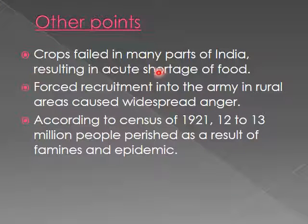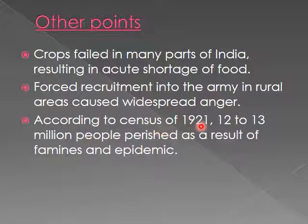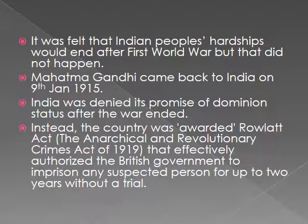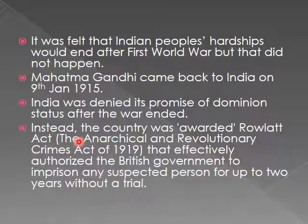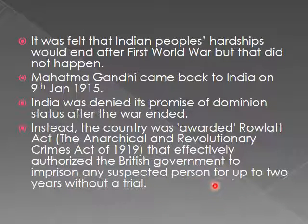Crops failed in many parts of India, resulting in acute shortage of food. Forced recruitment into the army in rural areas caused widespread anger. According to the census of 1921, 12–13 million people perished as a result of famines and epidemics. It was felt that Indian people's hardships would end after the First World War, but that did not happen. Mahatma Gandhi returned to India on 9th January 1915. India was denied its promised Dominion status after the war and was instead awarded the Rowlett Act — the Anarchical and Revolutionary Crimes Act of 1919 — which authorised the British government to imprison any suspected person for up to two years without a trial.